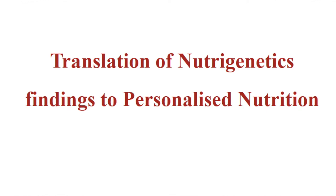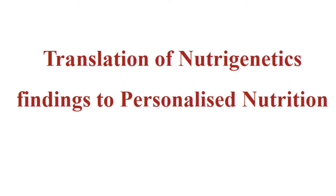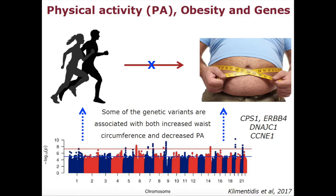A lot of studies have explored the relationship between physical activity levels and obesity, where lack of physical activity can increase the risk of obesity. But we talk about the genetics of obesity a lot — there is also genetics behind physical activity levels. Quite recently, two years ago, a group looked at all the genes contributing to physical activity levels; they carried out a genome-wide association study — a hypothesis-free study — screening the entire genome and identifying genetic variations contributing to decreased levels of physical activity.